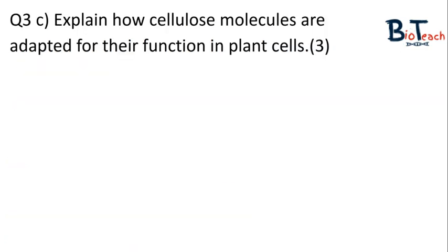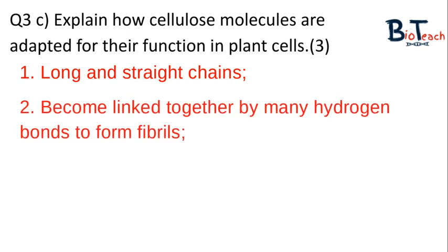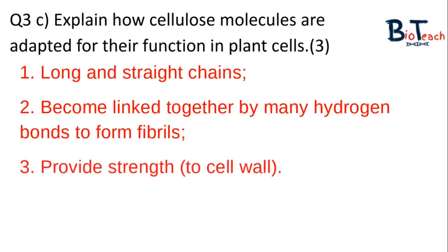3C looks at a similar question but this time it's about cellulose, worth three marks, so we have to mention at least three points. The first point I would make is that cellulose has long straight chains. I would then talk about how these chains become linked together by hydrogen bonds and how that provides strength, in particular to the cell wall. The key thing is to make sure that whilst you're writing in full sentences, your thoughts flow well enough to articulate your answer clearly. Waffling in the exam will only waste your time.